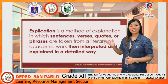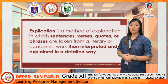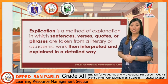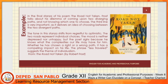The second way to elucidate a concept is through concept by explication. Concept by explication is a method of explanation in which sentences, verses, quotes, or phrases are taken from a literary or academic work, then interpreted and explained in detail. For example, in the final stanza of 'The Road Not Taken,' Frost discusses his dilemma of coming upon two diverging paths. The tone shifts from regretful to optimistic; the two roads represent individual choices, and the phrase 'less traveled' suggests the theme of individualism.